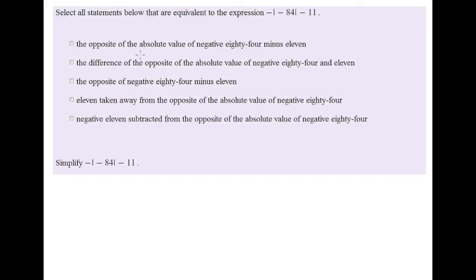The first option says: the opposite of the absolute value of negative 84 minus 11. The keyword 'minus' means we keep the exact order the numbers are given in. So I place the minus symbol, then 'the opposite of' gives a negative sign, followed by the absolute value of negative 84, then minus 11. This is the exact same expression as the one given, so I check this box — it's a valid English phrase.